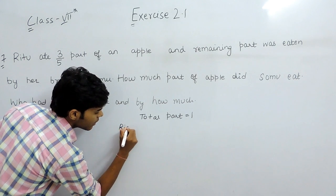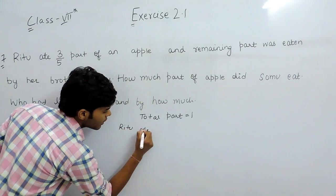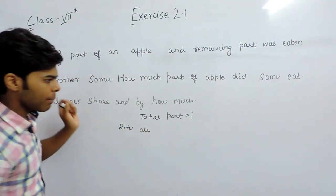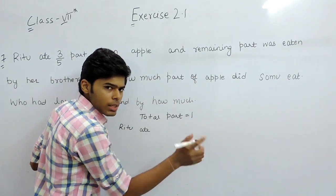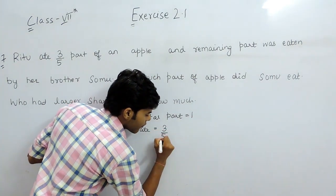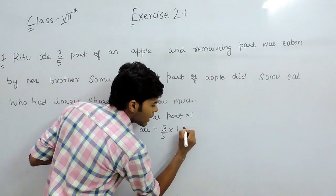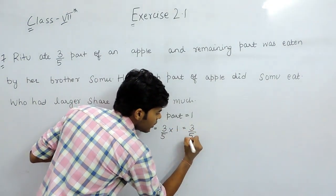Here it says that Ritu ate 3 by 5 part of an apple. I told you that the total is 1. So she ate 3 by 5 of 1, that will be equal to 3 upon 5.